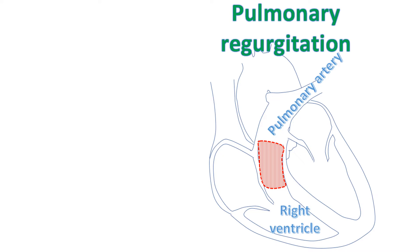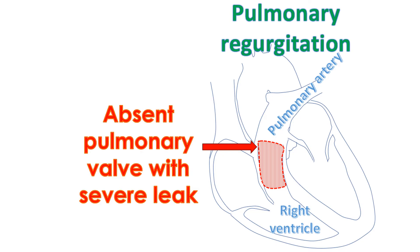The pulmonary valve may even be absent by birth, often associated with other more complicated birth defects of the heart. Severe pulmonary regurgitation can also occur after a repair of complex birth defects of the heart in which a narrowed pulmonary valve is opened up by an operation.